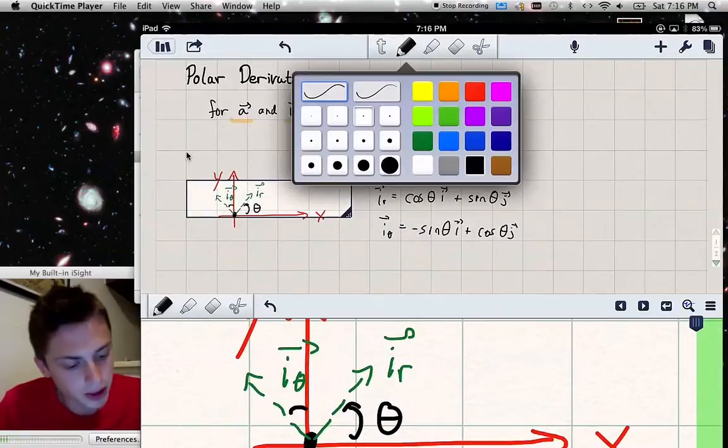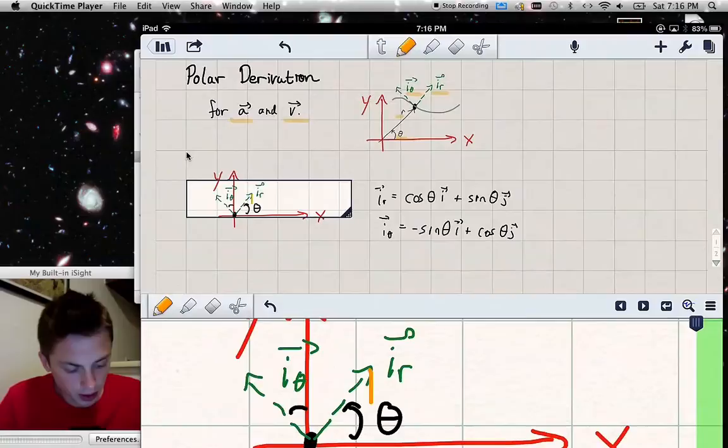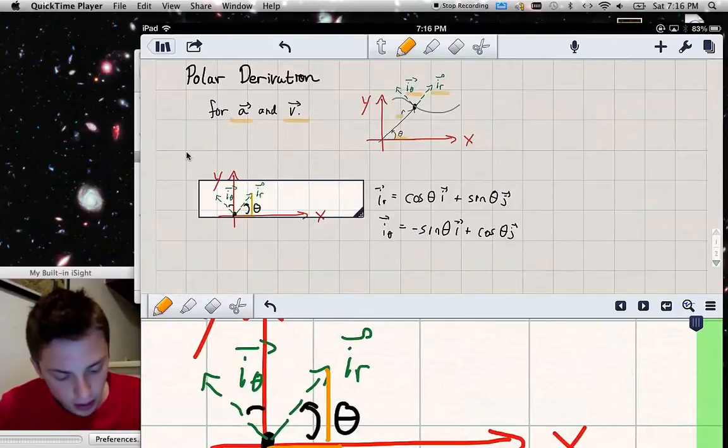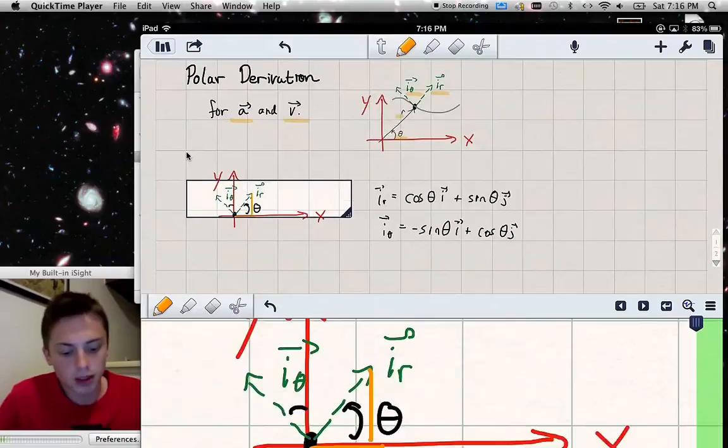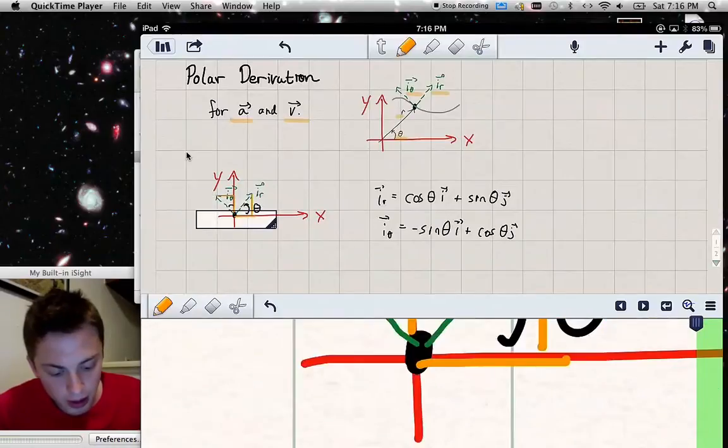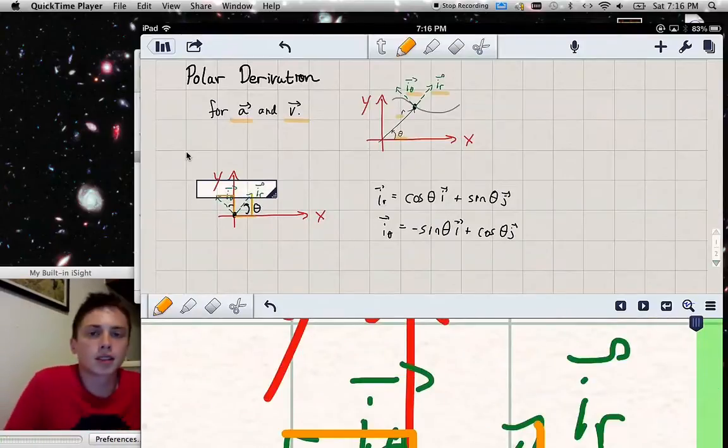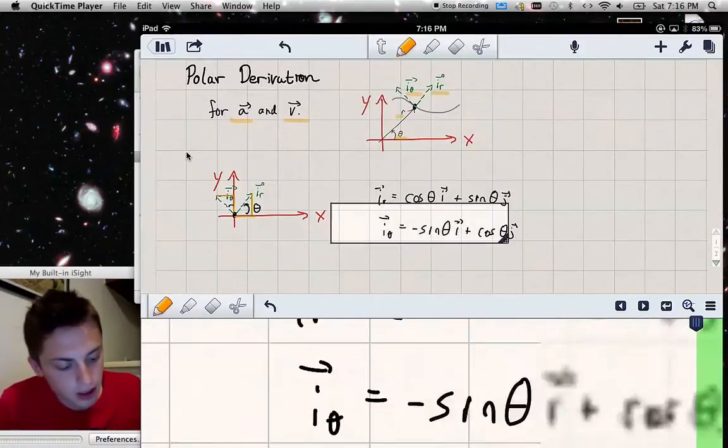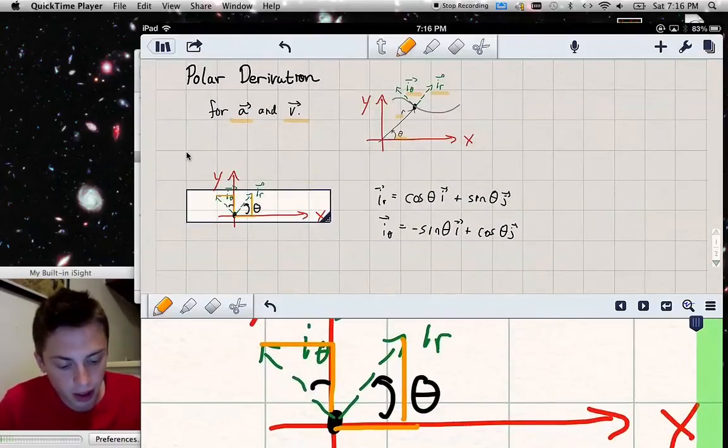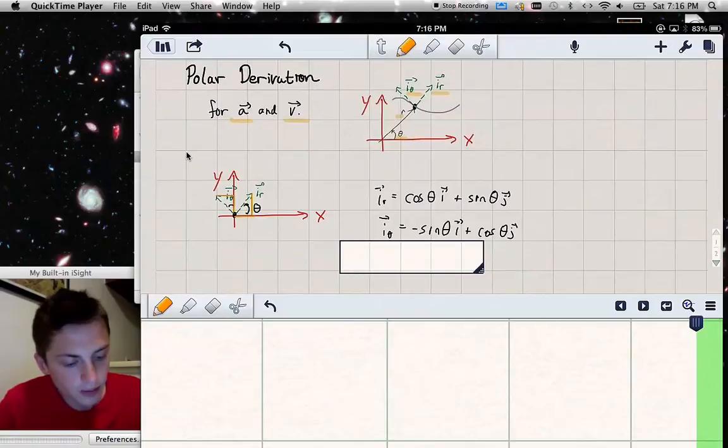So what we're doing is creating a right triangle here with the hypotenuse of length, the magnitude of i_r, which is 1 because it's a unit vector. So the x component is given by cosine, the y component is given by sine, and the same for i_theta. However, our angle is up here, so sine gives us the x component and is negative, so we have a negative sign in front, and a positive y component given by cosine for i_theta.